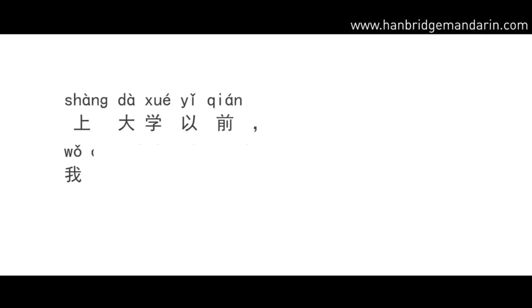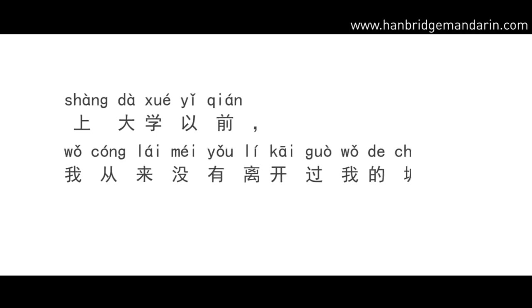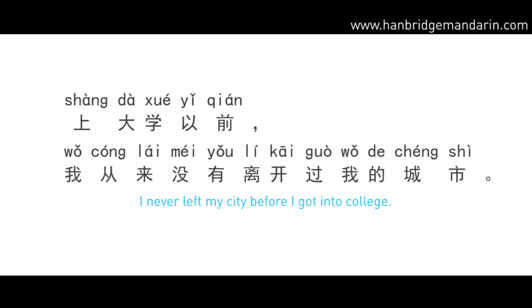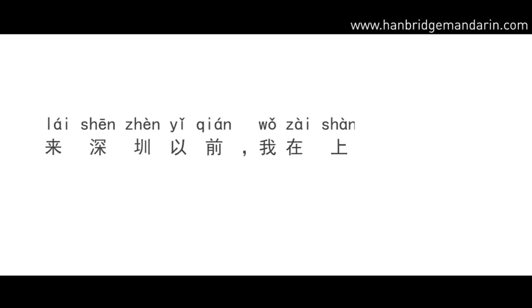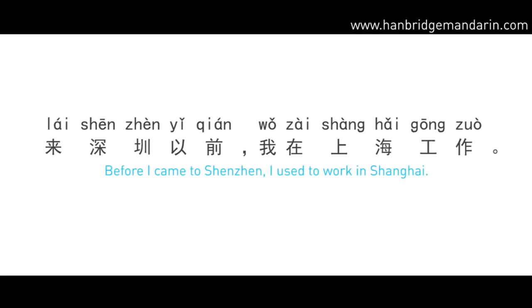上大学以前，我从来没有离开过我的城市 — this means the time period before I got into college, so we cannot use 从前. 来深圳以前，我在上海工作 — the sentence emphasizes the time period before I came to Shenzhen, so we can only use 以前.